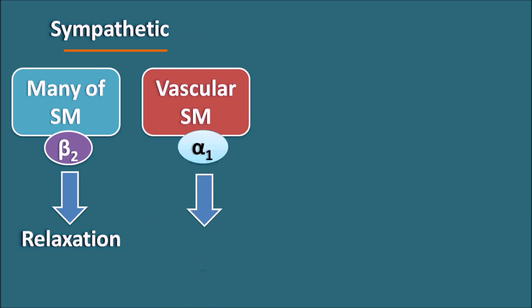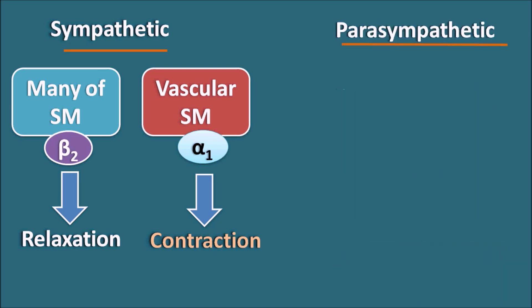But at the vascular smooth muscles, the alpha 1 receptors are more abundant, which are responsible for vasoconstriction. Vascular smooth muscle can also express beta 2 receptors at a few blood vessels supplying the skeletal muscle and the liver, where they produce relaxation. Apart from these blood vessels, at most systemic blood vessels, alpha 1 receptors are present which are responsible for contraction. In this way, the sympathetic system produces relaxation of many smooth muscles except the vascular smooth muscle.